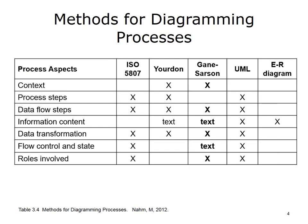Each of the methods for diagramming a process has its own set of capabilities. Gane-Sarson represents the process context — that is, the process or system boundaries, interactions with the outside world, and the major functions. It also represents information content, the order or sequence of the data flow steps involved in the process, the transformations that occur or should occur, and the roles that perform the processes.